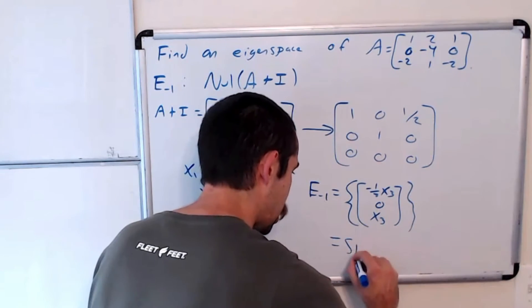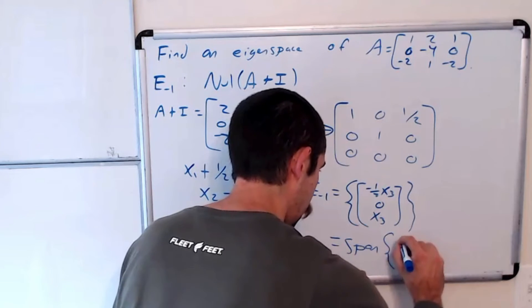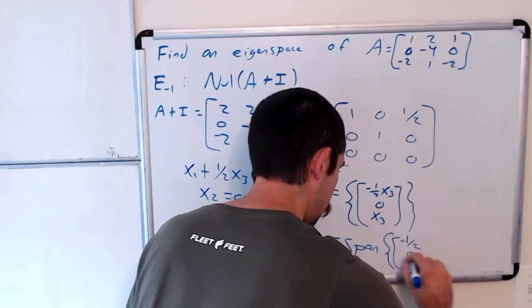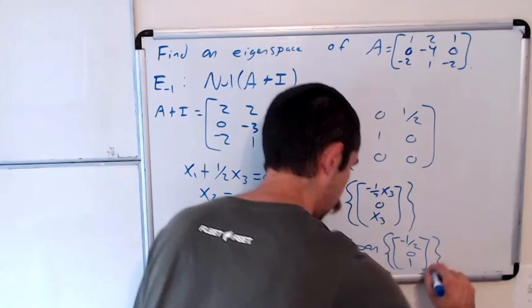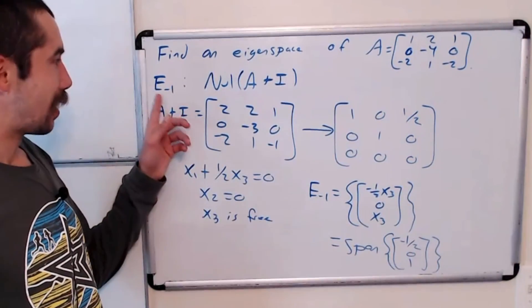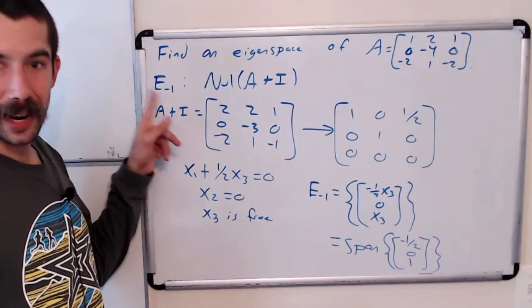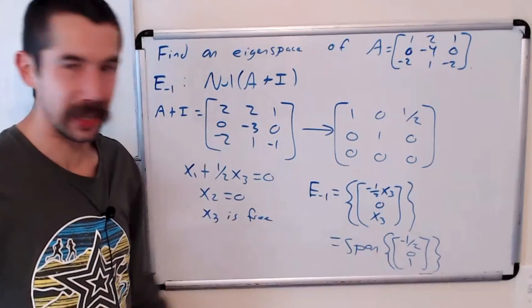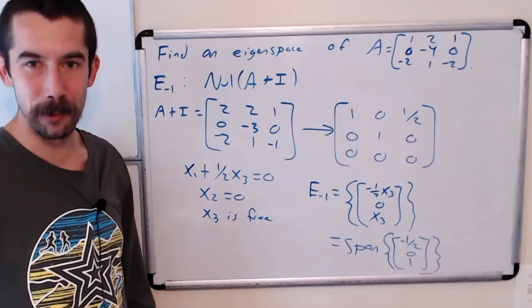We could write that as the span of the vector negative 1 half, 0, 1. So the eigenspace for negative 1 is the span of the vector negative 1 half, 0, 1.